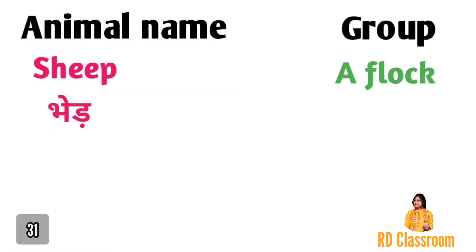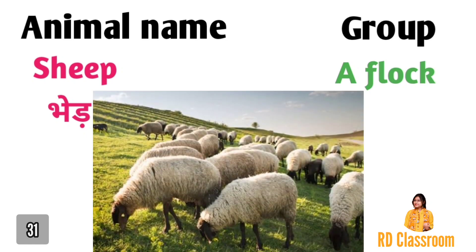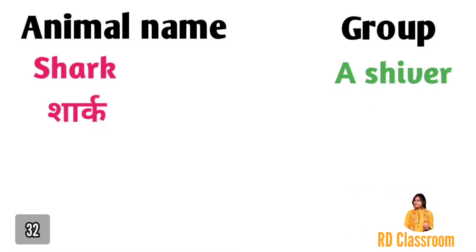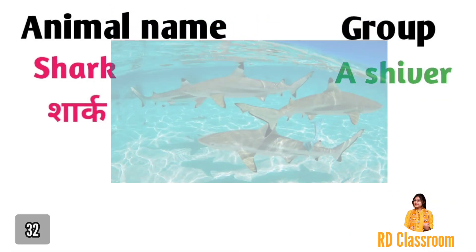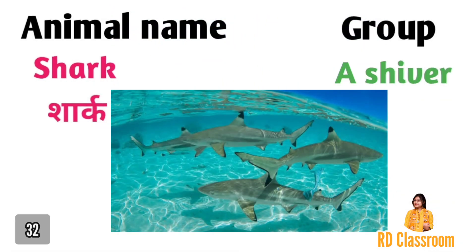Number thirty-one is sheep, ya fir bheer, jiske group ko kaha jata hai a flock. Number thirty-two is shark, jiske group ko kaha jata hai a shiver.